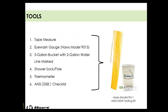Some tools you'll need: a tape measure for height measurements, an eyewash gauge — our model is the 90-015 — a five-gallon bucket with a two-gallon water line marked, a shower sock and pole, a thermometer to confirm ANSI-compliant temperature, and an ANSI checklist to ensure all requirements are covered. Once we get into more extreme chemicals like acids and corrosives, flush times can be 30 or 45 minutes — check your SDS sheet for those chemicals. Ensure you're testing for at least 15 minutes.